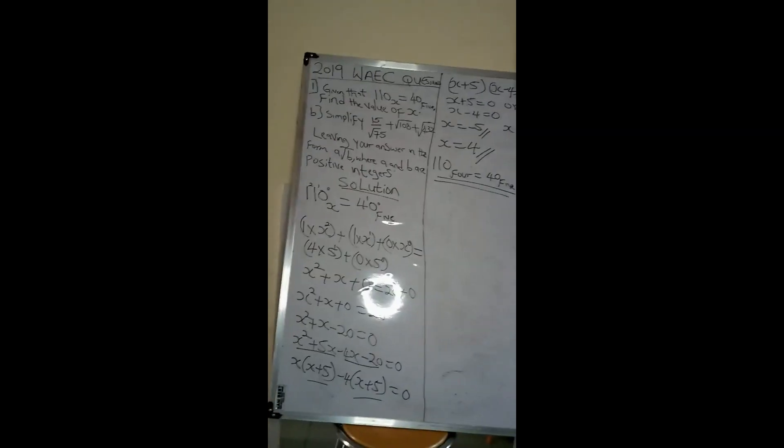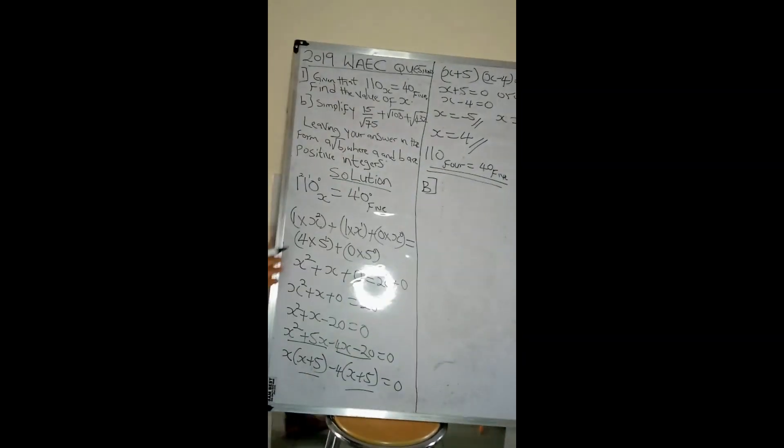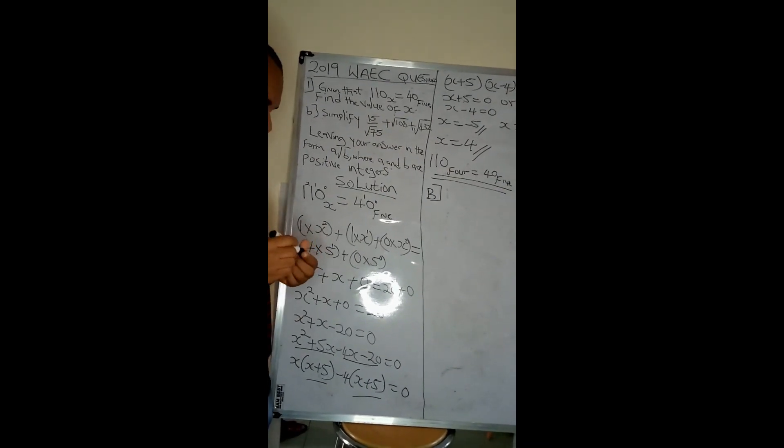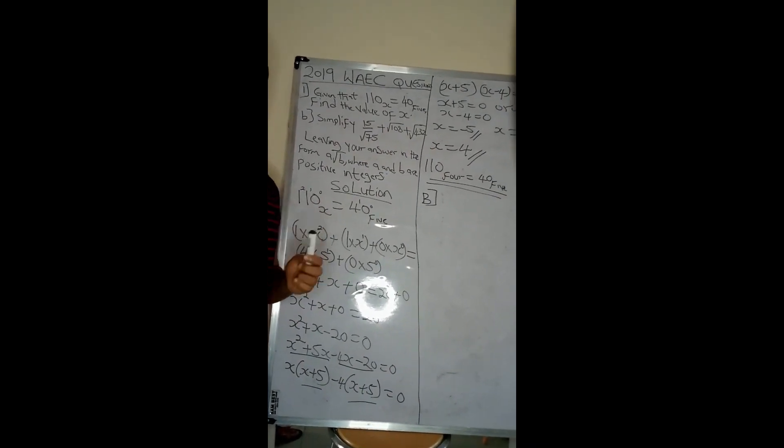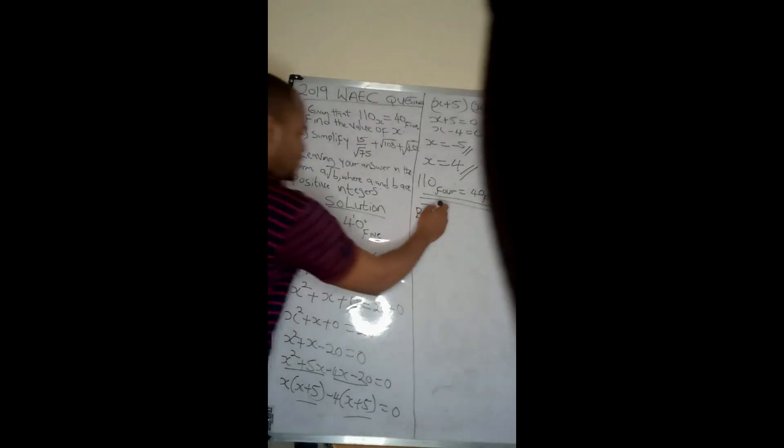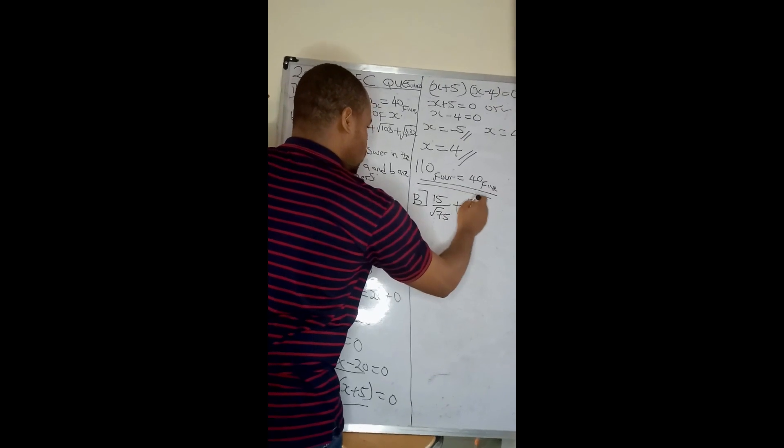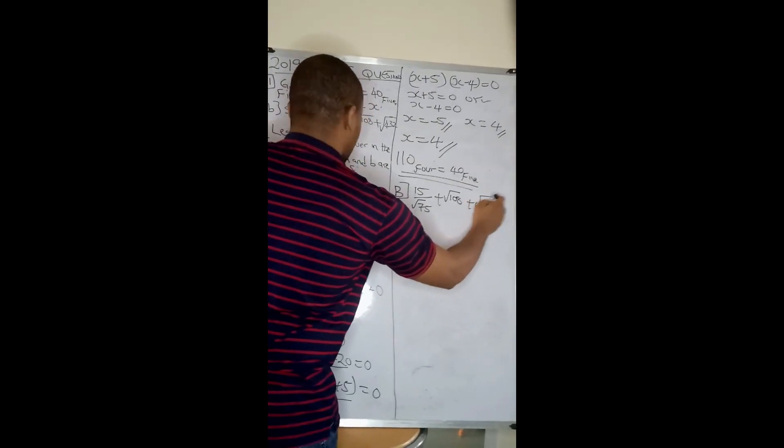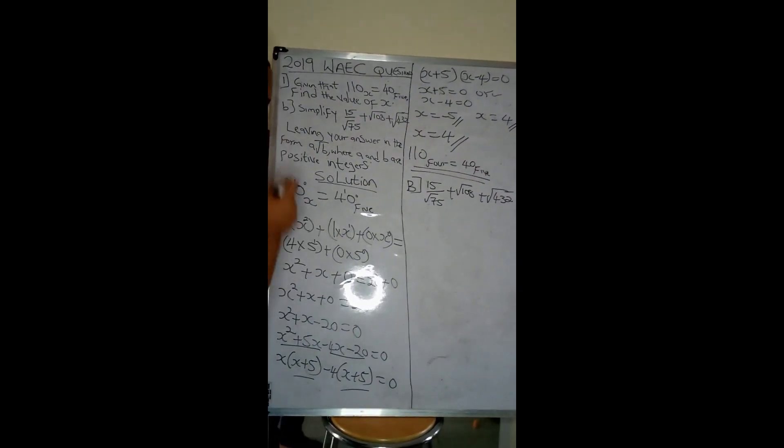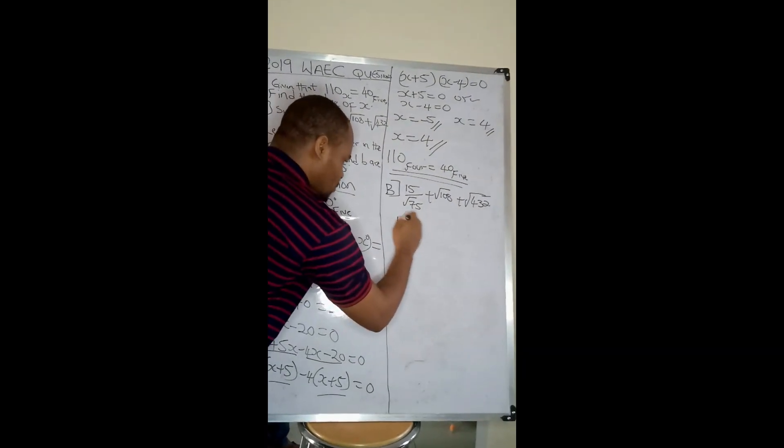Quickly, we'll go to part B of the question. Part B is on surds. Remember I told you that when you're solving surds questions, the first thing you need to look at is how to reduce what is given into perfect squares so that you can find the square root. I'm given 15 all over root 75 plus root 108 plus root 432.